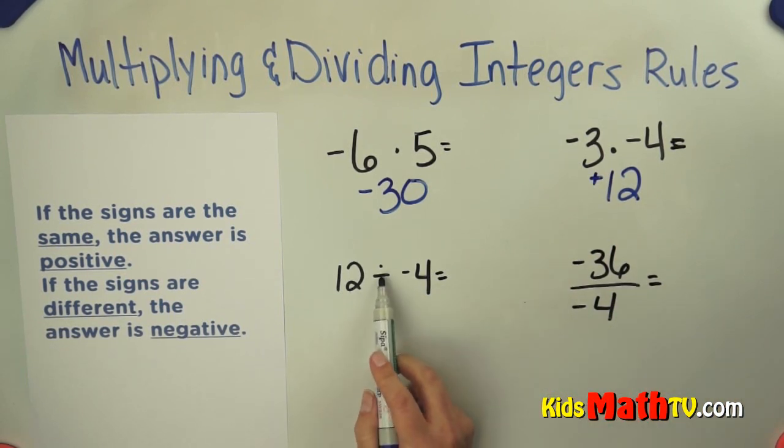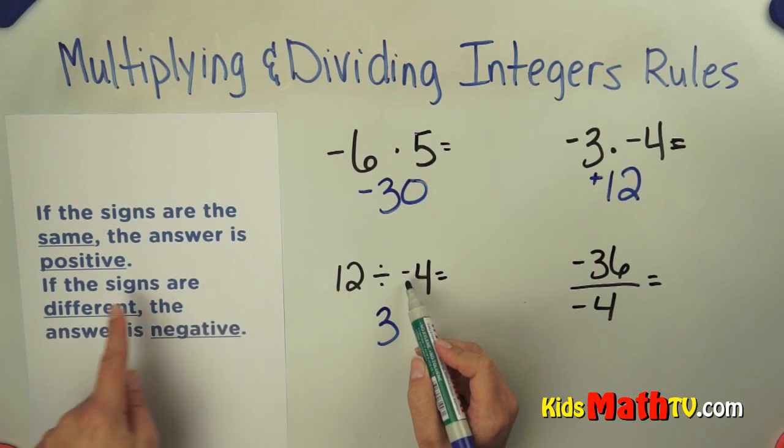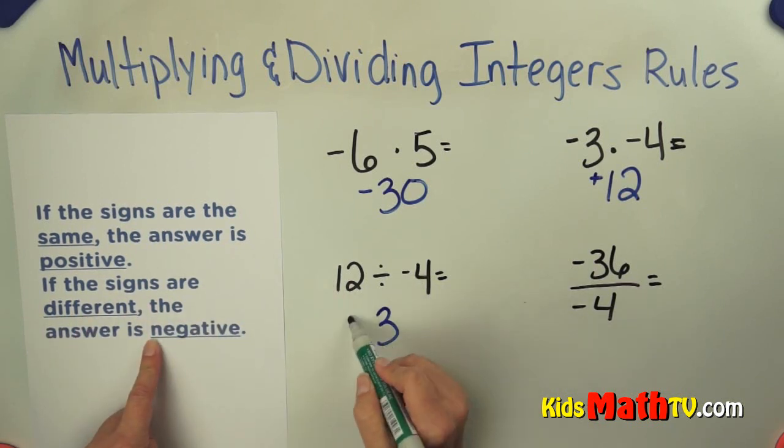Let's take a look at this one: 12 divided by negative 4. I'm just going to do 12 divided by 4, which is 3. Now the signs are different - this is a positive and a negative - so the answer is negative.